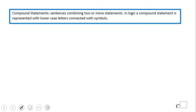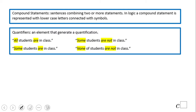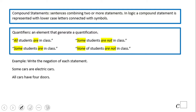Most of the time in logic theory you're going to have compound statements — that means more than one statement — connected by symbols. You'll also have quantifiers. For example, 'all students are in class' — the negation would be 'some students are not in class.' And 'some students are in class' — the negation is 'none of the students are in class.'